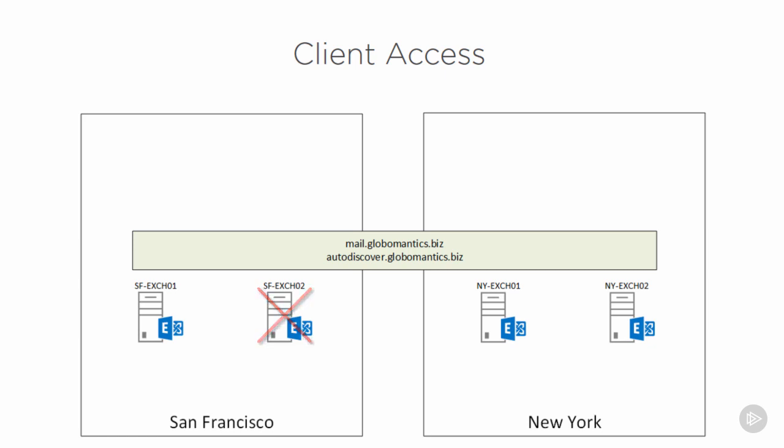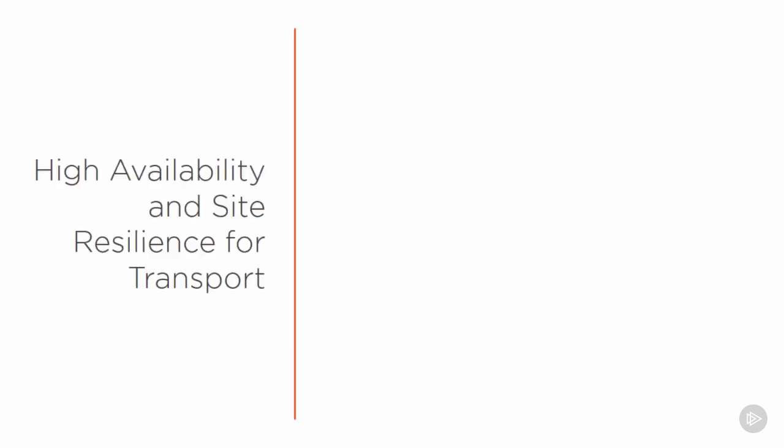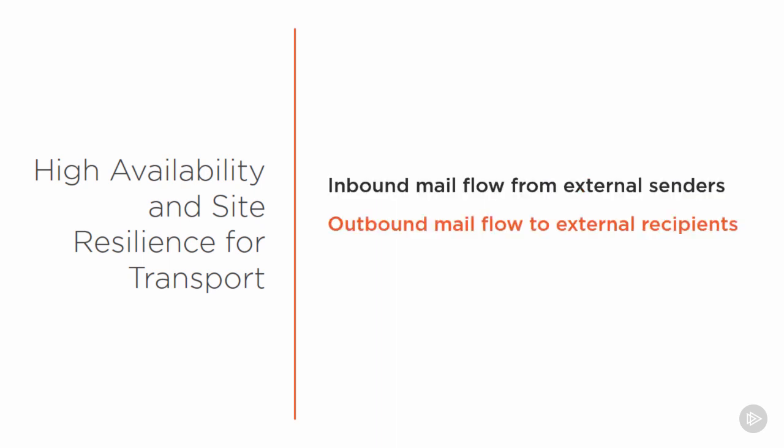So we need to think along similar lines for transport as well. Mailbox and client access are resilient to multiple different failure scenarios, so transport also needs to be resilient to multiple different failure scenarios. We need to consider inbound mail flow from external senders, outbound mail flow to external recipients, and internal mail flow as well. We need to be aware of what will happen under different failure scenarios, how our design addresses those issues, and how we as administrators need to respond for specific circumstances.